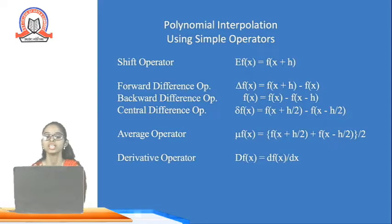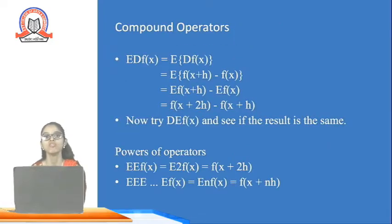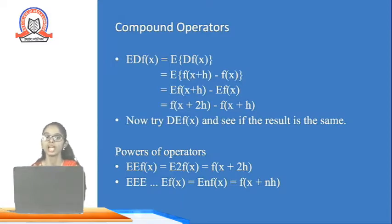Similarly, the backward difference operator is defined using the nabla operator: nabla f(x). The average operator and the derivative operator D are also defined. The compound operator is the finite differences operator expansion: E · D f(x) = f(x + h). Try D · E into f(x) and see if the result is the same.